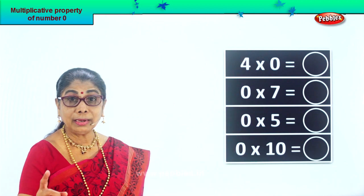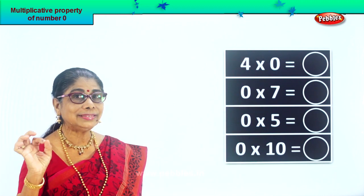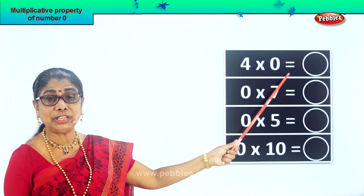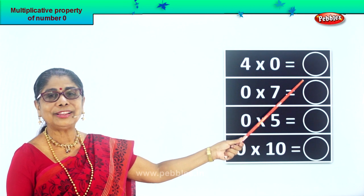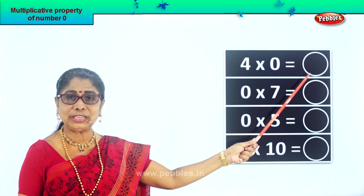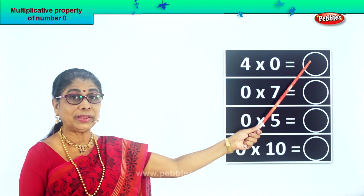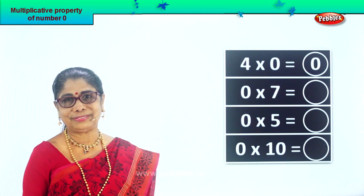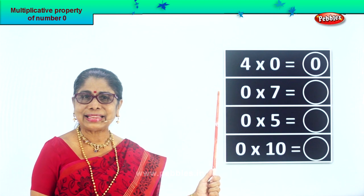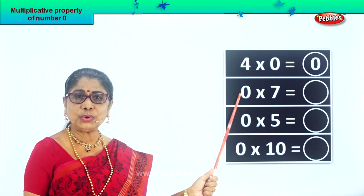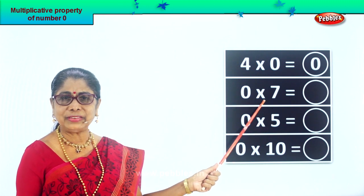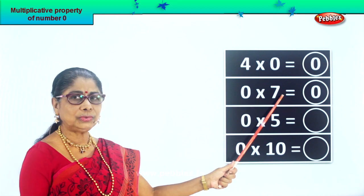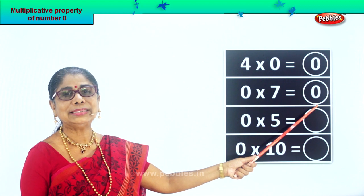We are learning Multiplicative Property of Zero. Look — four into zero, four multiplied by zero. Four into zero is equal to — what is the answer? Zero. Four into zero is equal to zero. So in the column over here we write zero. Any number multiplied by zero gives you zero itself. Next, zero multiplied by any number — zero into seven. Zero multiplied by seven is equal to — good — zero. Zero multiplied by seven is equal to zero, very good.